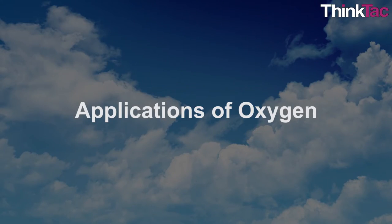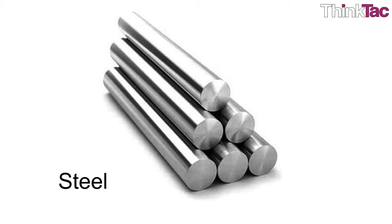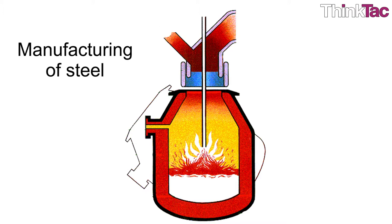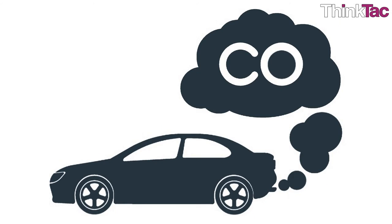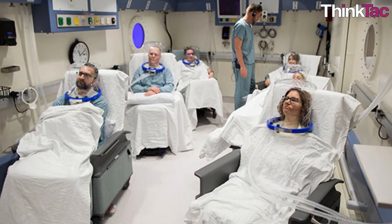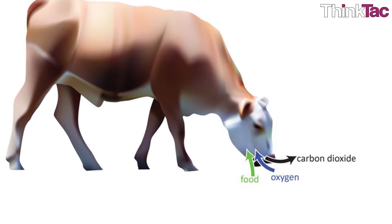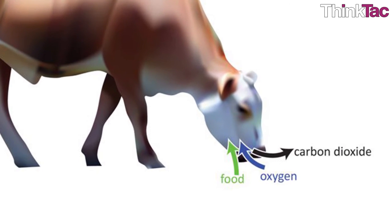Oxygen is a very important element not only for life processes but also for various industrial applications. Steel manufacturers use oxygen to increase the purity of steel and remove carbon impurities by reacting them with oxygen, a process that releases carbon dioxide. Pure oxygen is used for maintaining regular breathing in patients with certain respiratory disorders and for treating carbon monoxide and carbon dioxide poisoning. It is vital for hospitals and medical facilities to have oxygen available to their patients.